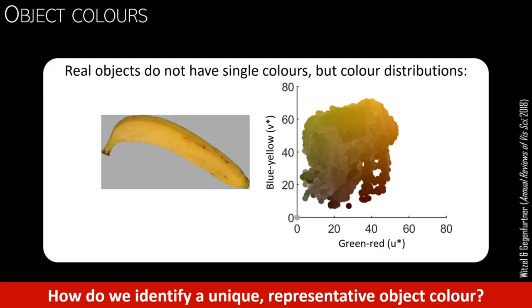The question is now, how do we identify a unique color that we consider to be representative and typical for the object, such as the typical yellow of a banana?